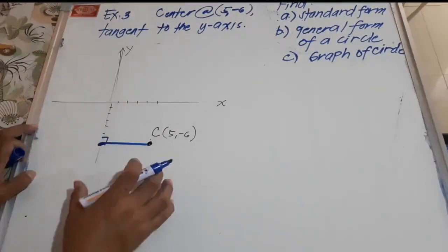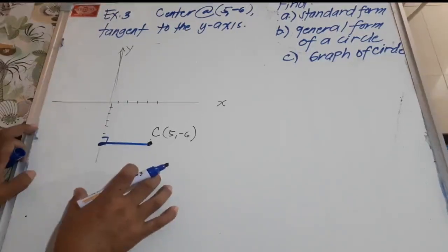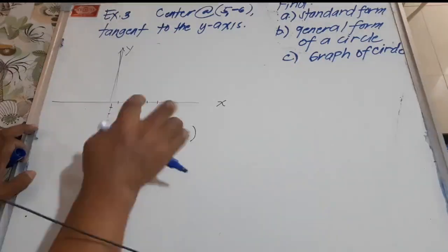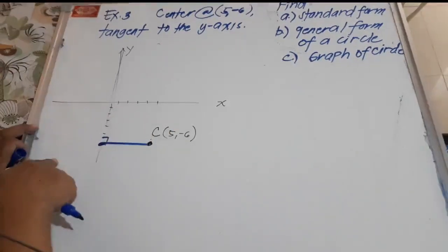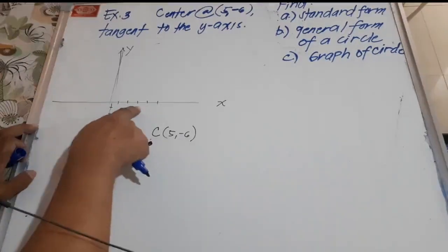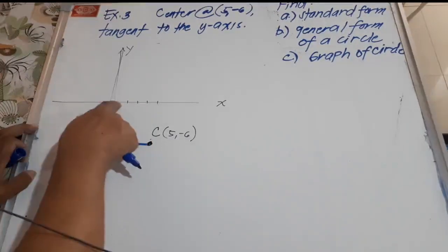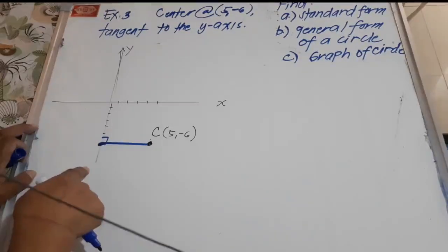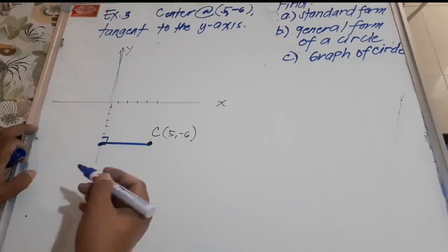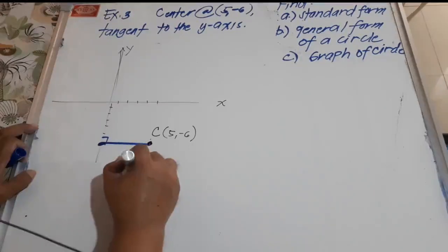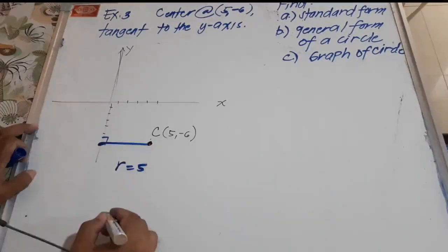To determine the length of the radius, we just count the units on the scale. Starting from the center, we count 1, 2, 3, 4, 5 until we reach the tangent line, which is the y-axis. Therefore, the length of the radius is 5 units.